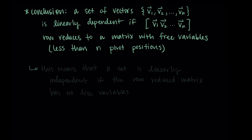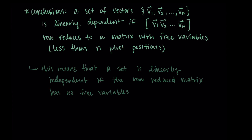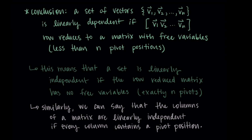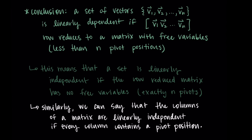Similarly, a set is linearly independent if the row reduced matrix made from the column vectors has no free variables — it has exactly n pivots for n vectors. This means the columns of a matrix are linearly independent if every column contains a pivot position. If there's a pivot in each column after row reduction, it's a linearly independent set of vectors, and the system itself is linearly independent.